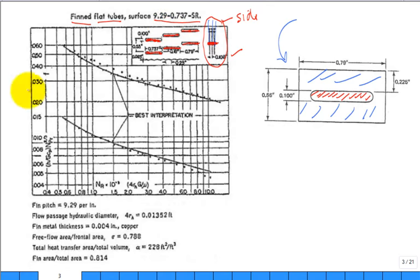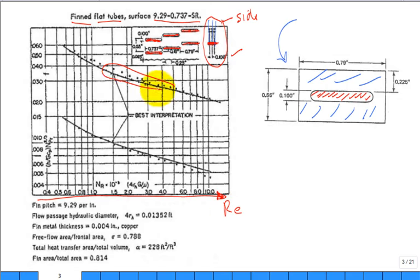The table gives us the flow passage hydraulic diameter as 4R_H, which equals D_H. It also gives the total heat transfer area per total volume, alpha. There are two plots: x-axis is Reynolds number, and there are two y-axis curves.